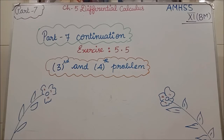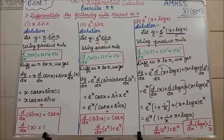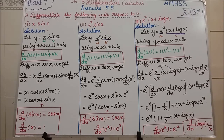Now we are going to see the third question. In the third question you are having 5 subdivisions. In the second subdivision we used the quotient rule because the question was in fraction form. Now in the third question, all the questions will be in product form. So in all 5 subdivisions of the third question, we will apply the product rule formula. This is very easy.